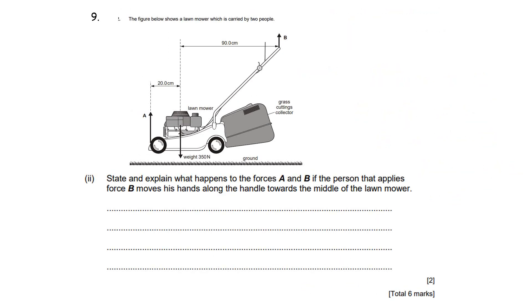Part two: state and explain what happens to forces A and B if the person that applies force B moves his hand along the handle towards the middle of the lawnmower. Two marks. So the person who applies the force at B is now moving their hand along so the force is going to be applied more closely to the pivot. That distance there is reducing and they've got to apply the same turning moment because they're balancing the moment of the weight force.